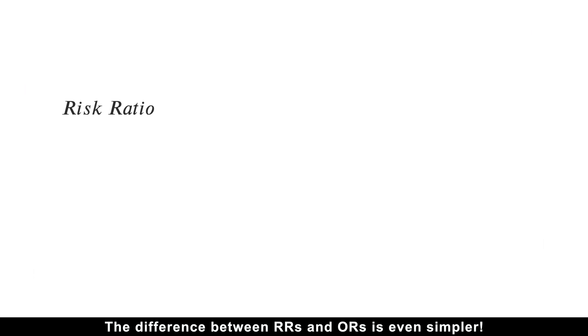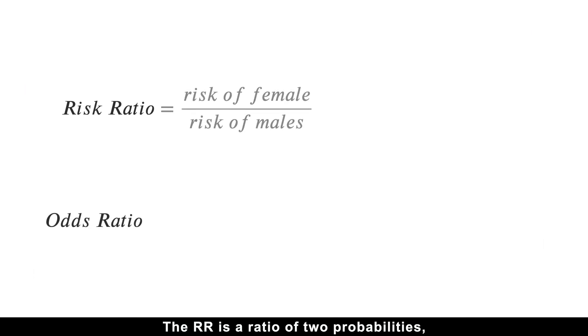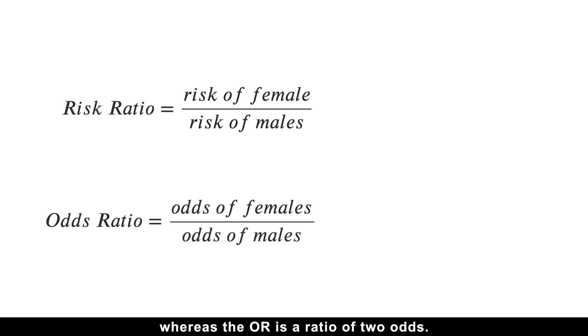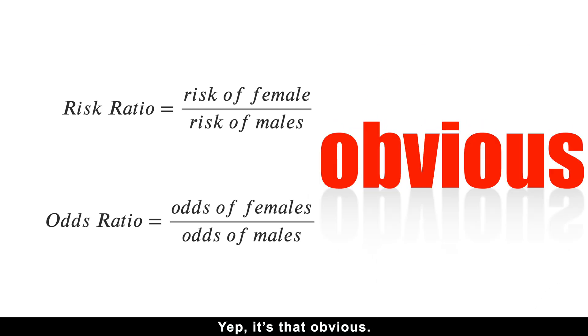And the difference between risk ratios and odds ratios is even simpler. The risk ratio is a ratio of two probabilities, whereas the odds ratio is a ratio of two odds. Yep, it's that obvious.